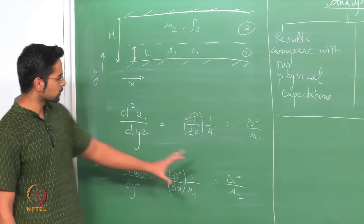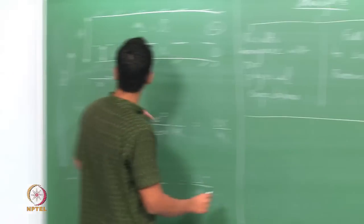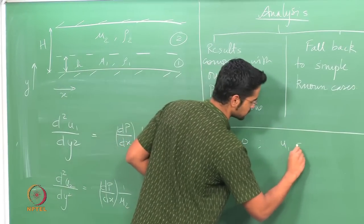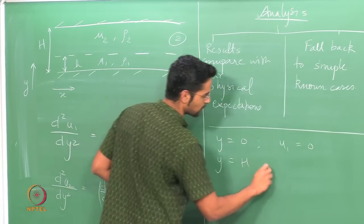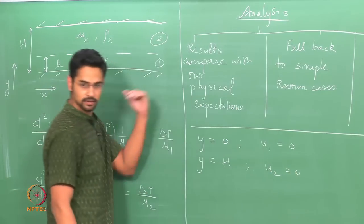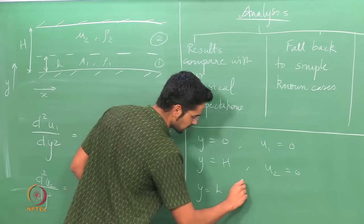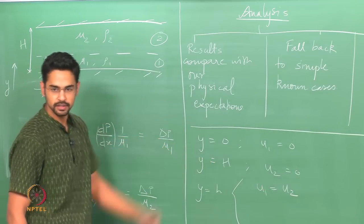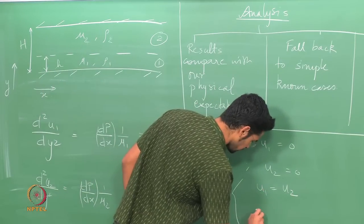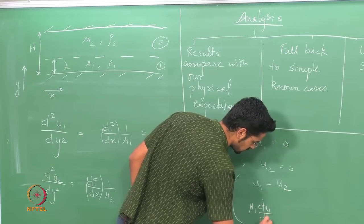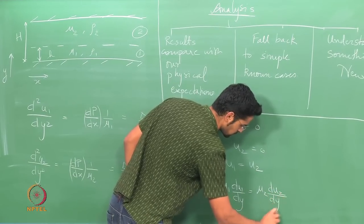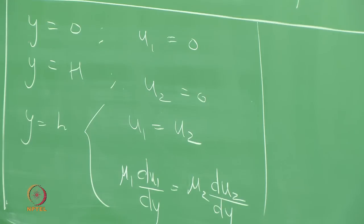Before progressing, we need the boundary conditions on both equations. At the bottom wall we have the no-slip condition. At the top wall we have no-slip on the top fluid. At the interface we have a pair of conditions from continuity of velocity, where both tangential velocities are equated. Finally we have the tangential stress balance.